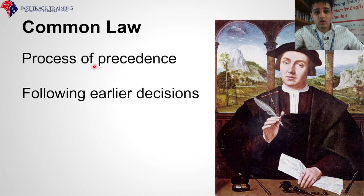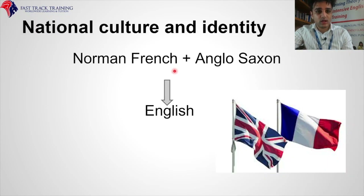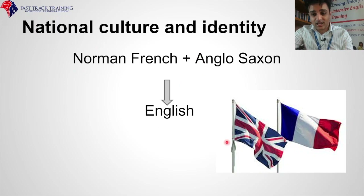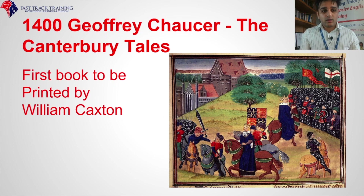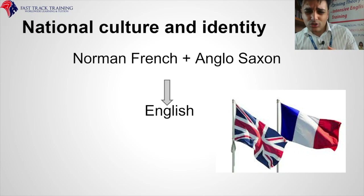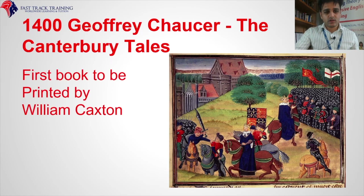Common law and process of precedence: this doesn't come up in your test anymore, but process of precedence means following past decisions in law to strengthen your case in the current situation. That's how the court systems work. This does come up in your test: national culture and identity. Norman French and Anglo-Saxon combined to make English because of 1066 and William the Conqueror. Many French words are the same in English because of a shared Latin derivative.